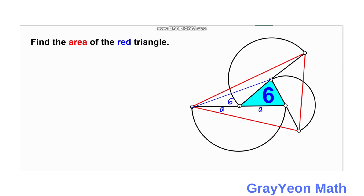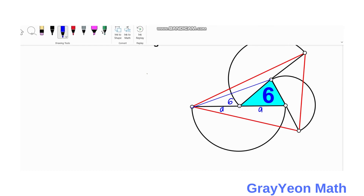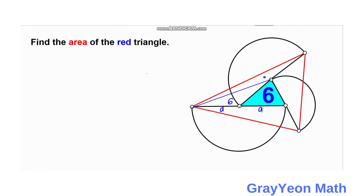Next, focus on this triangle. It has the same base as the 6-square-unit triangle because both bases come from the radius of the same semicircle. So if this side is B and this side is B, and since they have the same height, this triangle is also 6 square units.